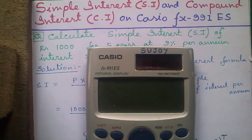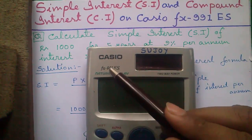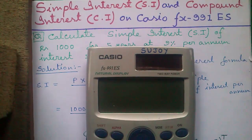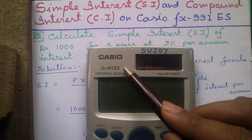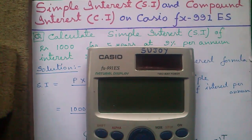Hello my dear friends, I am Sujoy and I welcome you to my first video on financial mathematics using the Casio FX991ES scientific calculator. Today I will tell you how to calculate simple interest (SI) and compound interest (CI) on the FX991ES calculator, and also some formulas related to compound interest. So let's start.